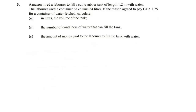Now to question number 3. A mason hired a laborer to fill a cubic rubber tank of length 1.2 meters with water. The laborer used a container of volume 54 liters. If the mason agreed to pay 1.75 Ghana cedis for a container of water fetched, calculate: A — in liters, the volume of the tank; B — the number of containers of water that can fill the tank; and C — the amount of money paid to the laborer to fill the tank.